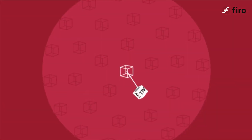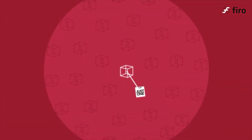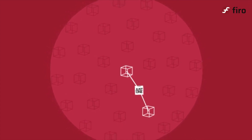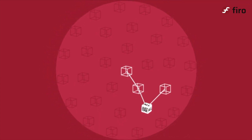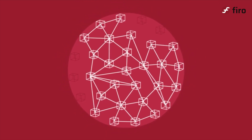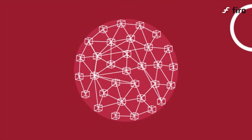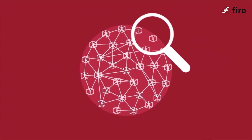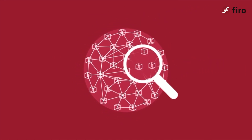So the transaction goes from one node to one node to one node, and at that point maybe only three nodes are aware of it. It's unclear which was the originating node, because if A transacts to B and B sends to C, C doesn't necessarily know whether B was the original node or if there were previous nodes before that. This creates obfuscation — how many nodes are behind me, and where did this transaction originally come from?